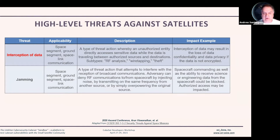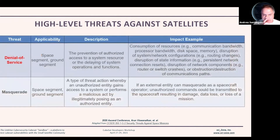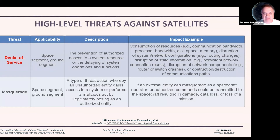Data interception can happen in the space segment, the ground segment, or even the space link segment. On the other side of the coin, a cyber attack could include jamming that data, so we can't get data up to the satellite or back to the ground. Another example of threats is a denial of service attack, where you're bombarding that satellite with data, taking up the bandwidth, disk storage, memory, or even the routers — and this could be in the space segment or the ground segment, leaving us unable to communicate with that satellite at all.